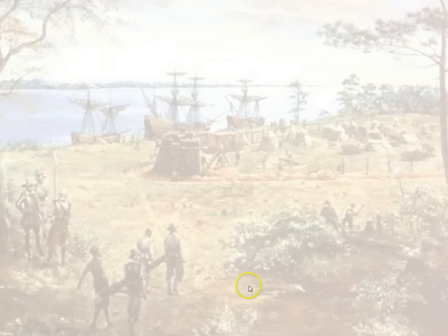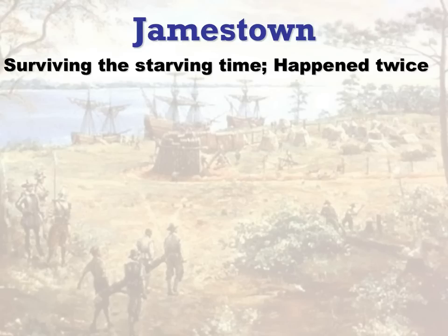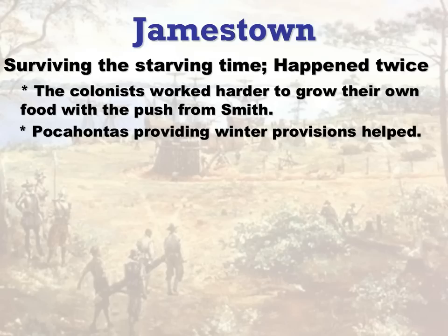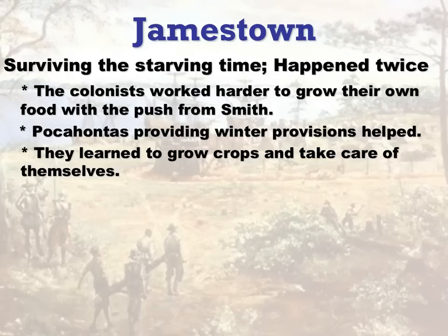Jamestown was only successful because it survived the tough times — the starving time — and it happened twice. The second time, John Smith wasn't around and had gone home to England. There were over 500 colonists dropped off by Captain Newport, and within that year, over 440 of them died. Even though Pocahontas and her Powhatan people provided winter provisions, it helped but didn't keep everybody alive. By the time John Rolfe showed up, there were only 60 people left.